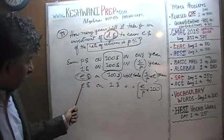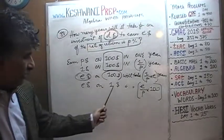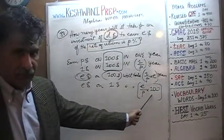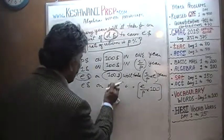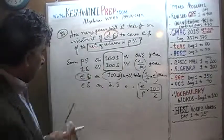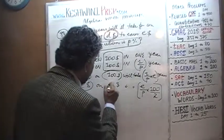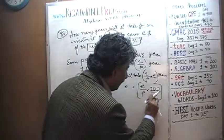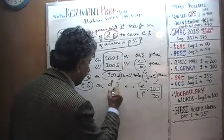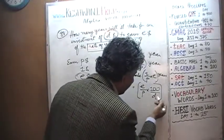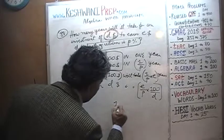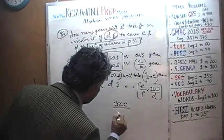Now we already have our return — E dollars. If earning E dollars on $1 takes 100E/P years, then investing $2 takes half as long, and investing $10 takes one-tenth as long. We are investing D dollars, so it takes one-D-th of that time. Our answer is 100 times E over D times P years.